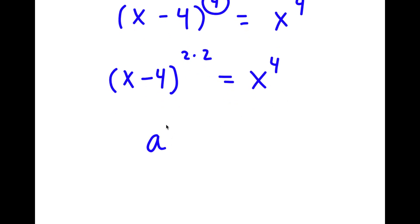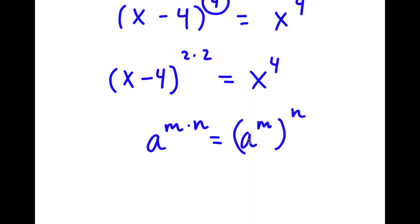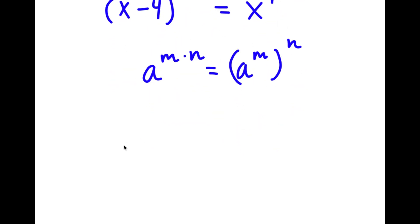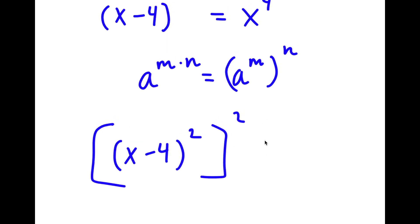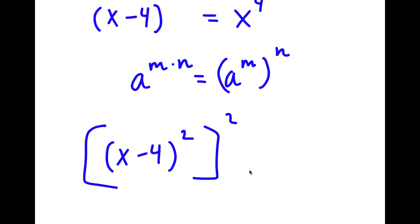If I have something in the form a to the power of m times n, this is equal to a to the power of m to the power of n. So in this case I have a to the power of 2 times 2, so I can rewrite this as (x minus 4) to the power of 2, to the power of 2, and this is equal to x to the power of 4.